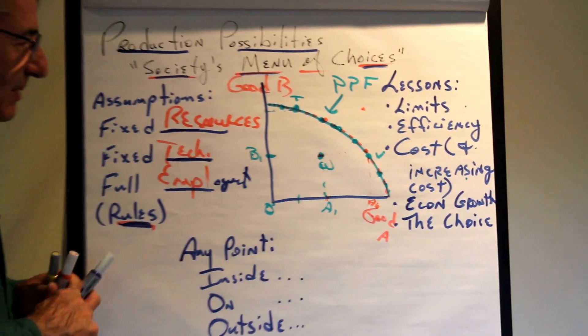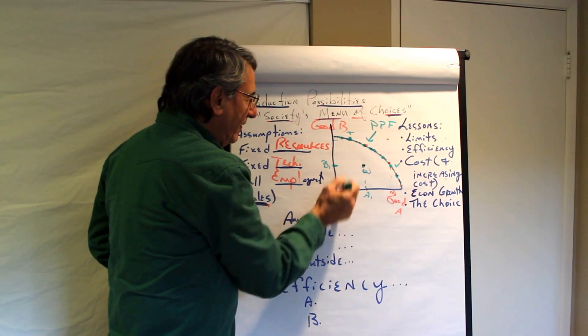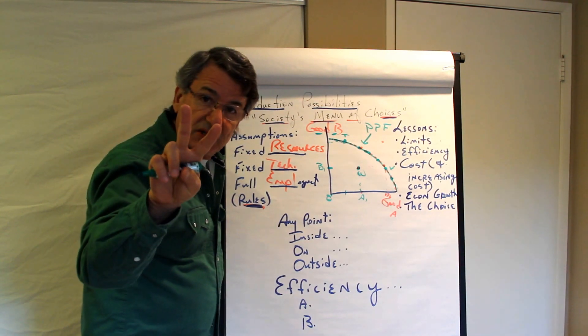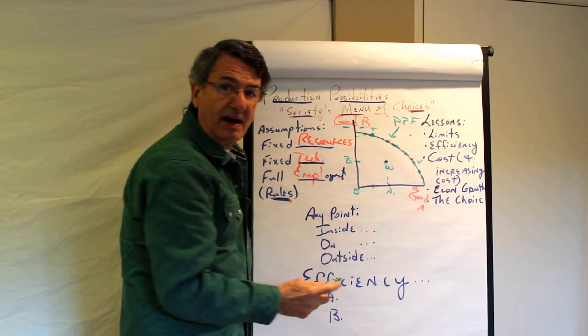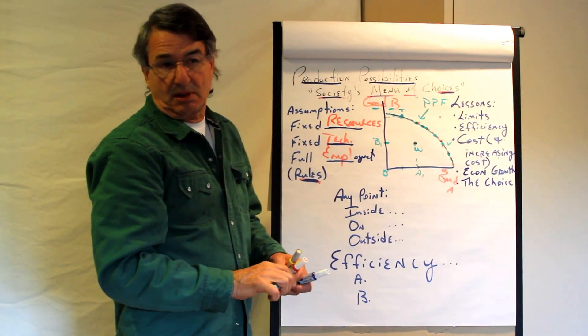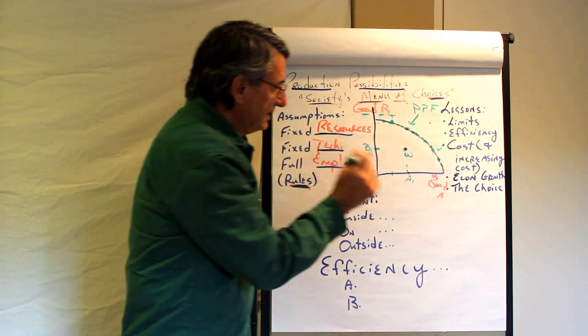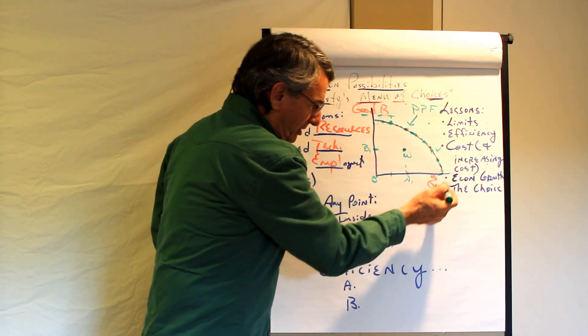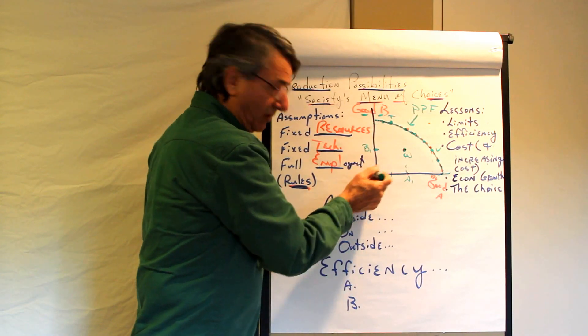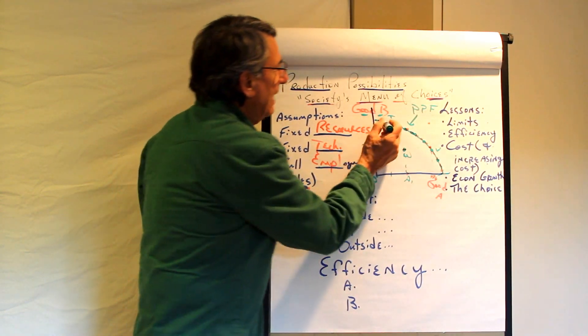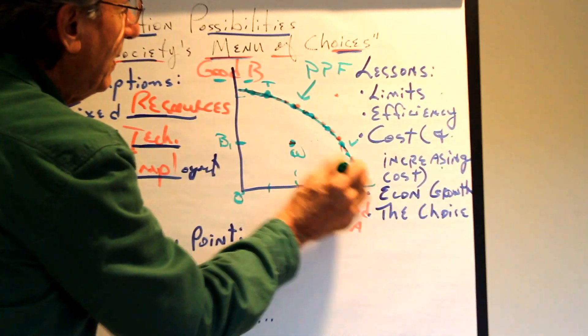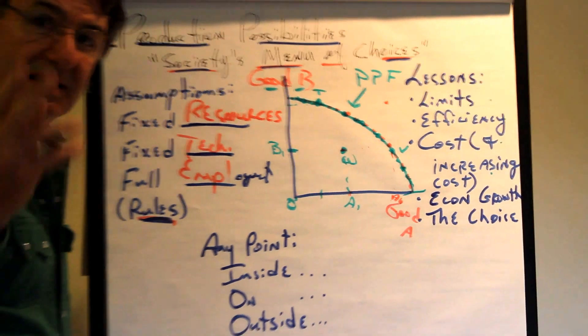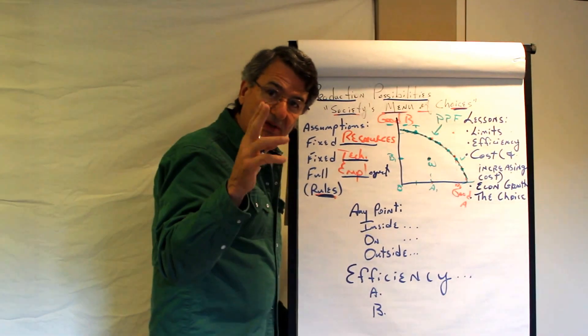We're going to use a diagram to do it. Here's the diagram. On the vertical axis, we have one good. It could be any good. We have to assume it's a two-good world because we're going to draw a two-dimensional graph. In the real world, the economy produces millions of different things, but in this discussion, it only produces two, good A and good B. The horizontal axis has good A, and these are the quantities of good A and the quantities of good B. There's a series of points, and every point represents a maximum possible combination of these two goods A and B that the society can produce given its resources and technology.